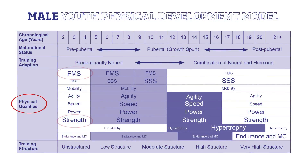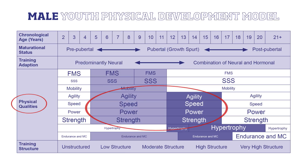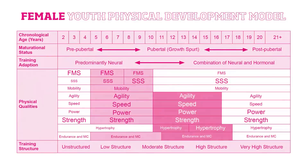Fundamental movement skills and strength are given more importance than all other physical qualities in early childhood. But agility, speed, power and strength become the primary focus from middle childhood and through the adolescent growth spurt. Simply put, the larger the text the more coaches should focus their training on developing those physical qualities.